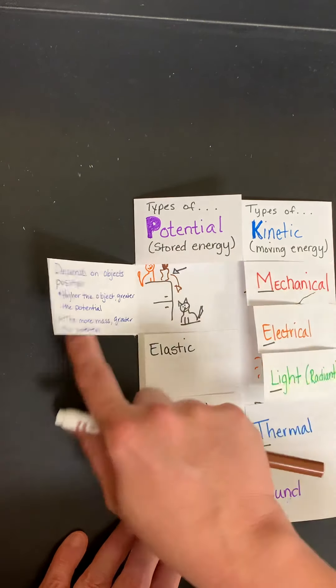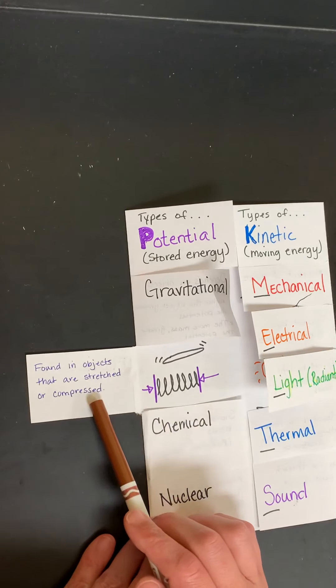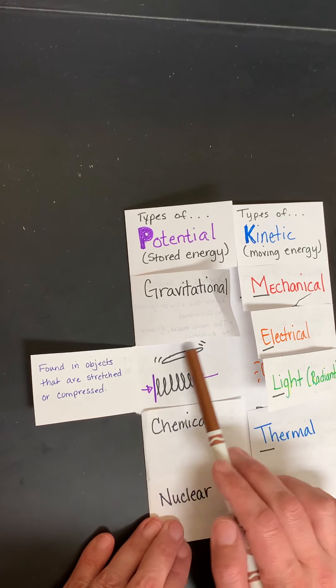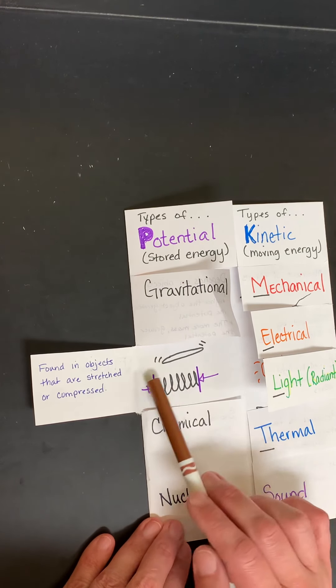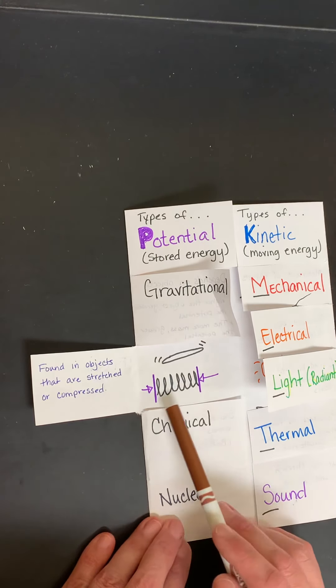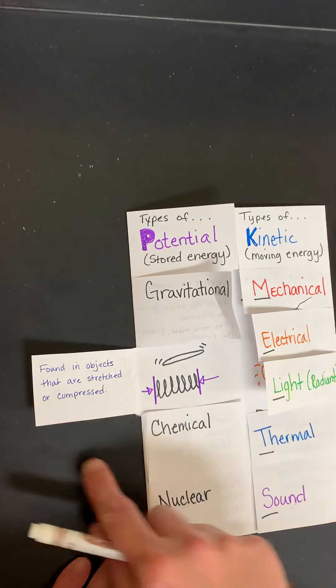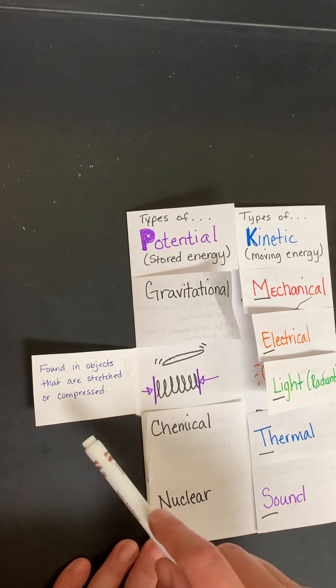The second type is elastic potential energy. Elastic potential energy is found in objects that are stretched or compressed. So if I have a rubber band and I'm stretching it out, I put these little dash marks to show it's being stretched. Or if I have a spring and I'm compressing it, I'm pushing it towards each other. So that when I let go of the spring, it goes, that's releasing its potential energy.